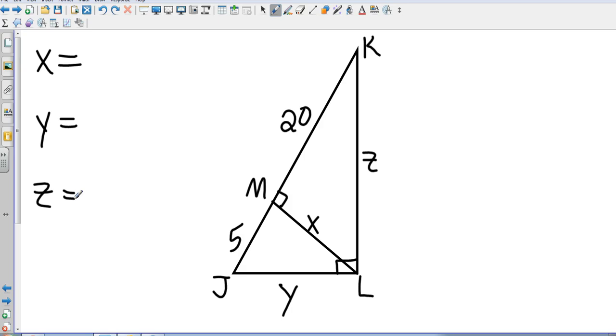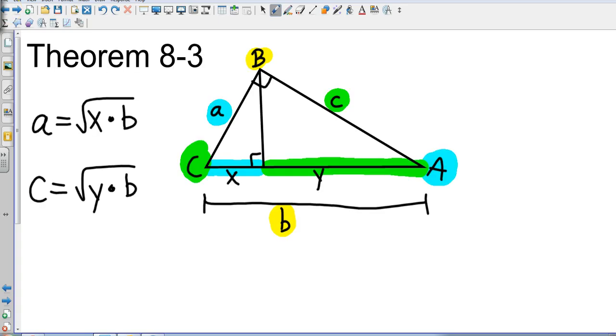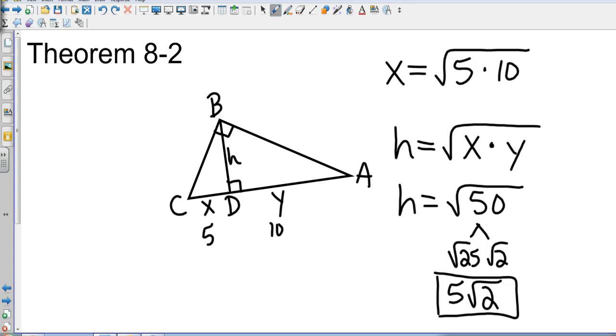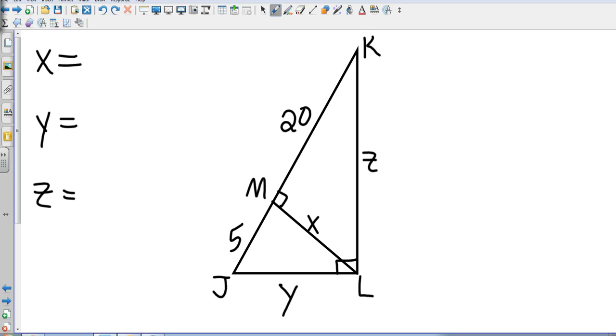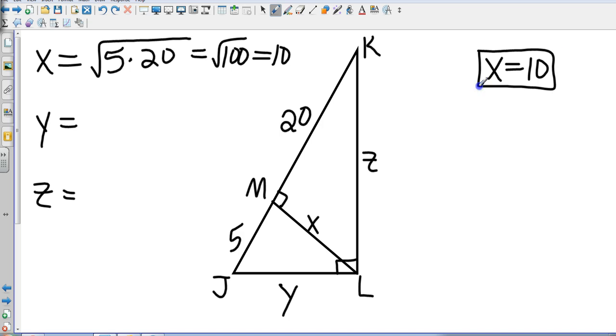So what I'm going to look at first is I'm going to look at X. I noticed that it's an altitude and it is drawn to that opposite hypotenuse. So the theorem that I'm going to use is Theorem 8-2. Remember that the altitude is the geometric mean between the two pieces that have been created. In this case, the two pieces that have been created are the 5 and the 20. So X is congruent to the square root of 5 times 20. Obviously, the square root of 5 times 20 is the square root of 100. So X equals 10.